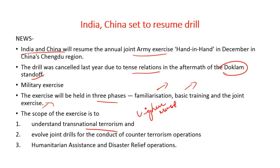The scope of this exercise includes understanding transnational terrorism — China is experiencing the wrath of Uighur Muslims in its Xinjiang province, and India is facing terrorist incursions from Pakistan and Bangladesh. The second important scope is to evolve joint drills for the conduct of counter-terrorism operations. The third scope is to improve HADR operations — Humanitarian Assistance and Disaster Relief operations. India and China, two formidable powers of Asia, have come together to counter the problems menacing the region.